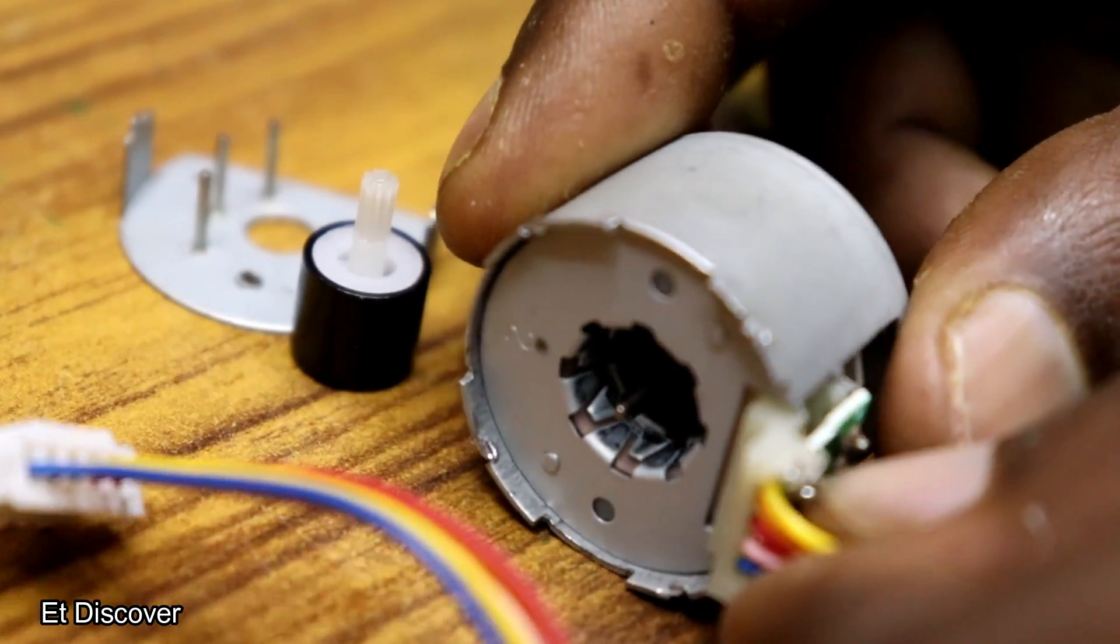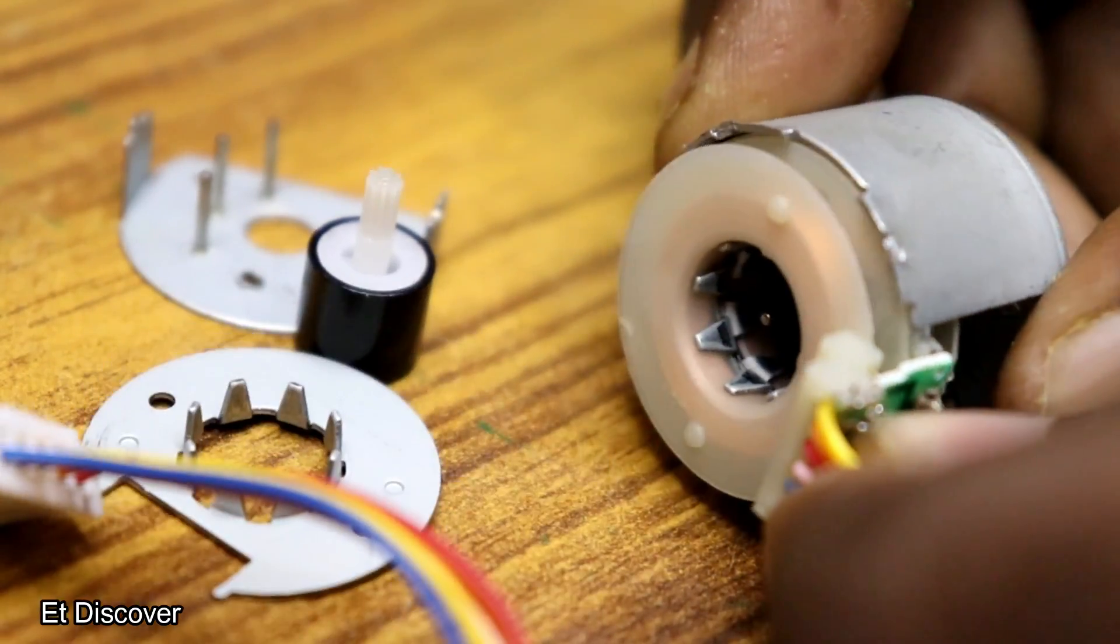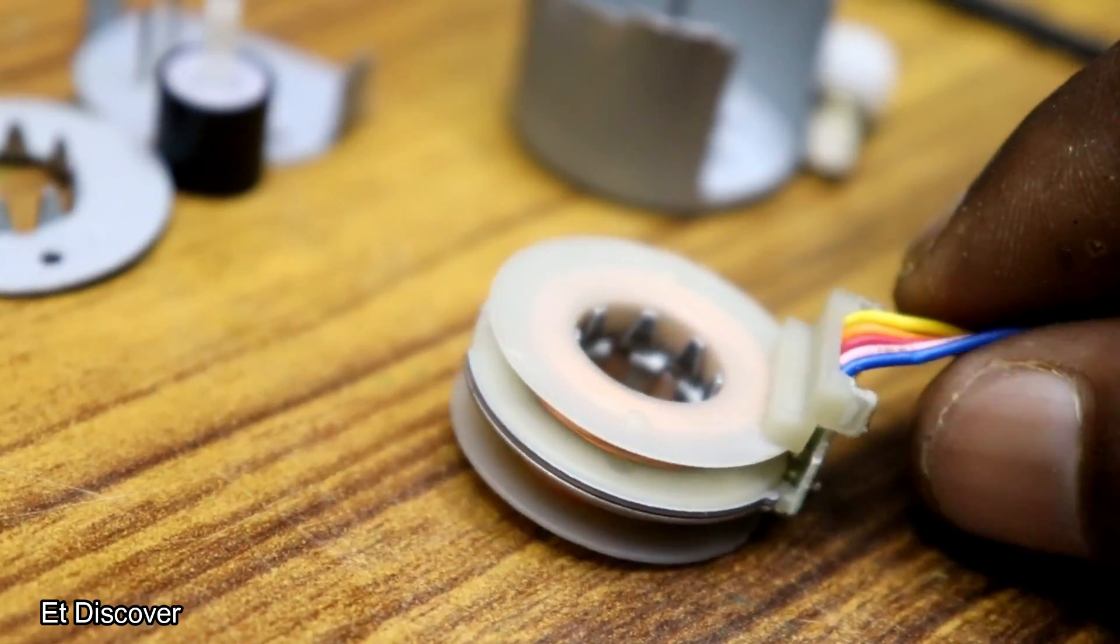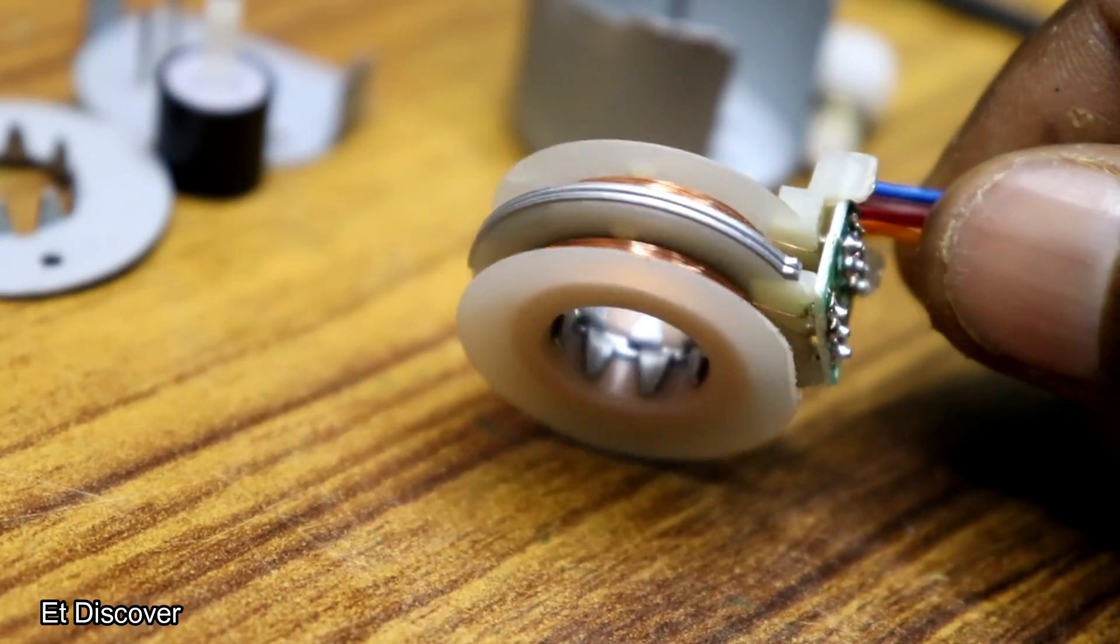And you can see there is another plate which is the magnet creating plate. And finally I open the coil. This coil is divided in two parts. Let's see how it will work.